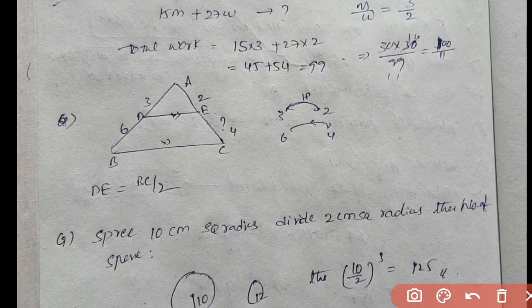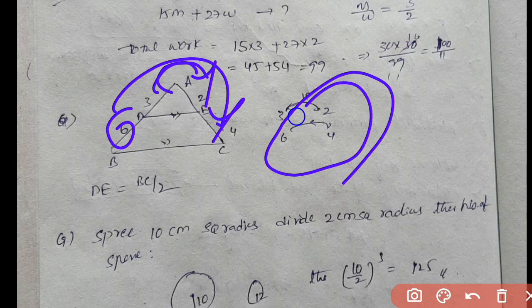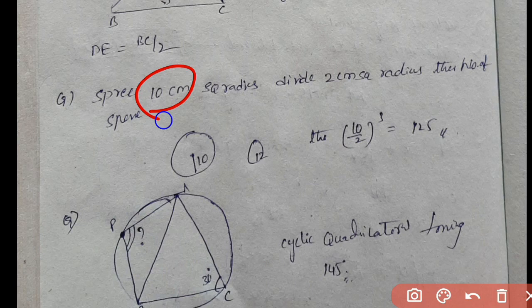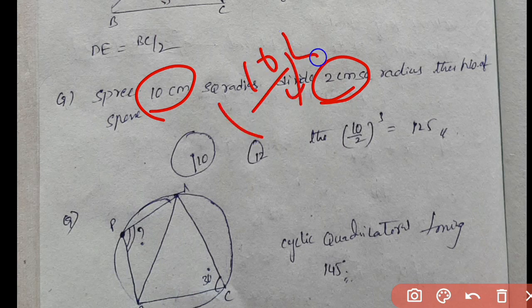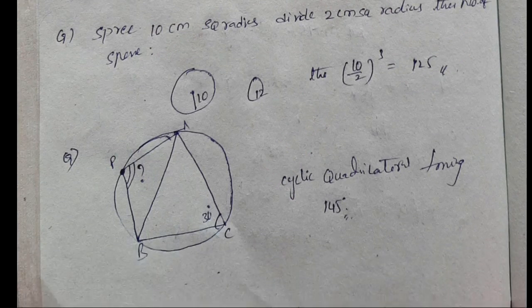Next easy question: a sphere of 10 cm radius is divided into smaller spheres of 2 cm radius. We find the number of smaller spheres as (10/2)³ = 5³ = 125 spheres formed.